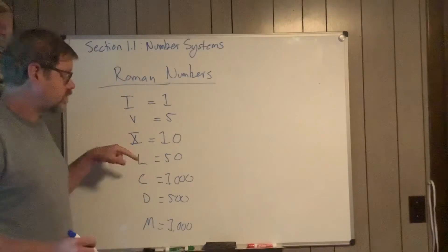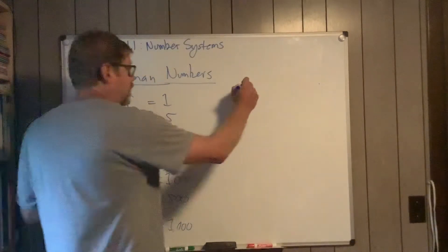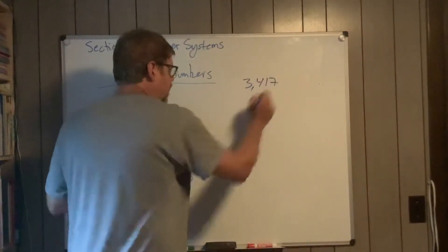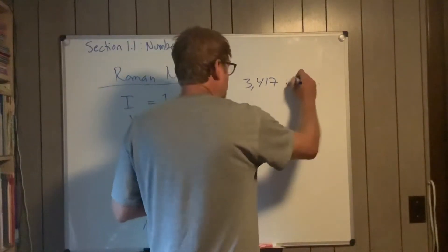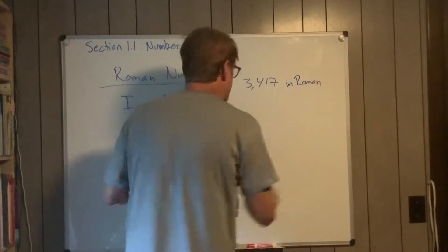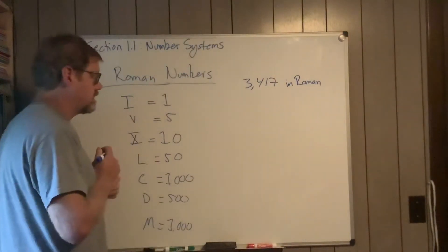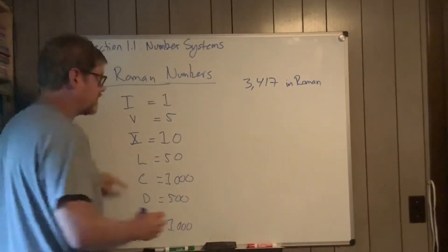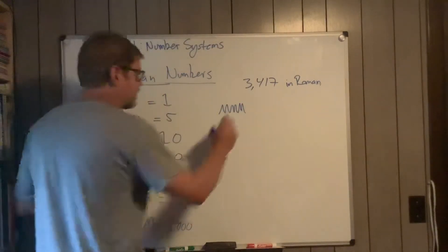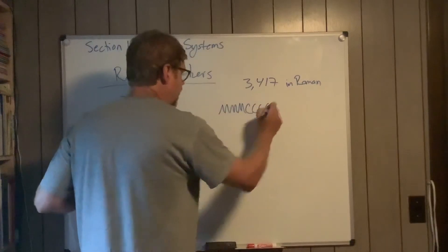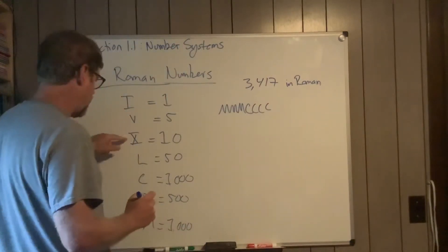This shortens up some of those things. For example, if I had 3,417 in Roman, then what we can do is MMM, four Cs—one, two, three, four—one X,